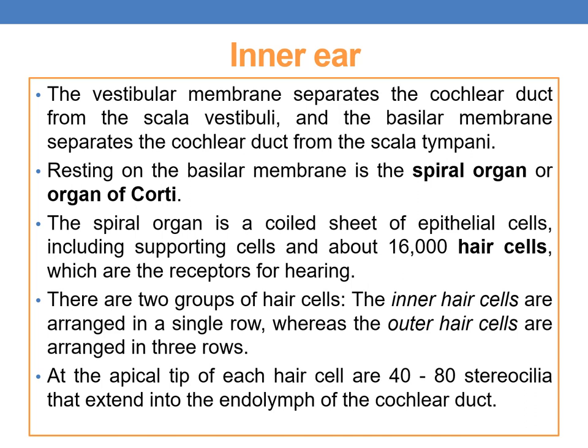The vestibular membrane separates the cochlear duct from the scala tympani. Resting on the basilar membrane is the spiral organ, or organ of Corti — a coiled sheet of epithelial cells including supporting cells and about 16,000 hair cells, which are the receptors for hearing.